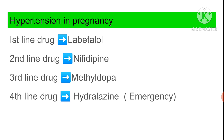Remember: labetalol is an alpha-1 and beta blocker. Second line is the calcium channel blocker nifedipine. Third line is methyldopa, an alpha-2 agonist. Fourth line is hydralazine, available only for emergencies via IV. Methyldopa and nifedipine are oral; labetalol is available in both oral and IV formulations.